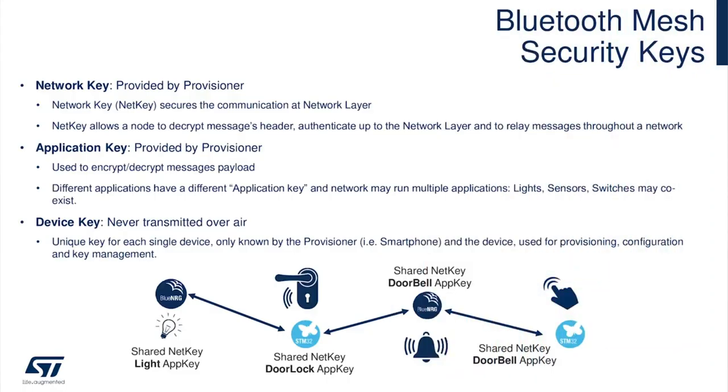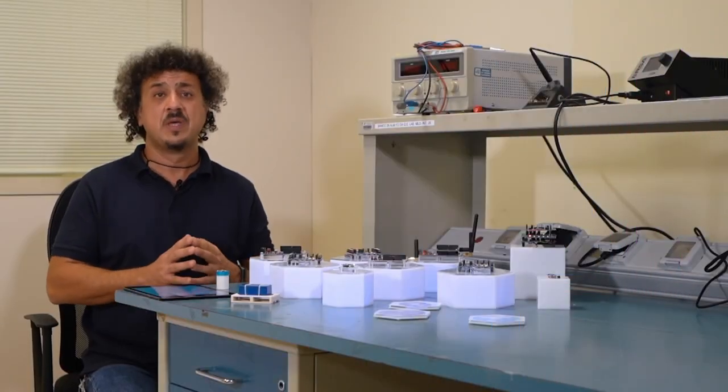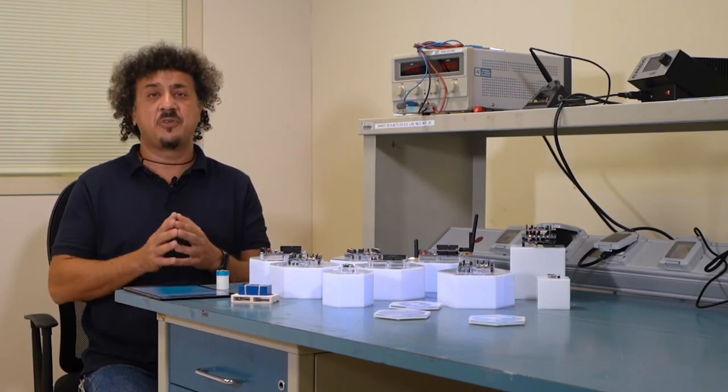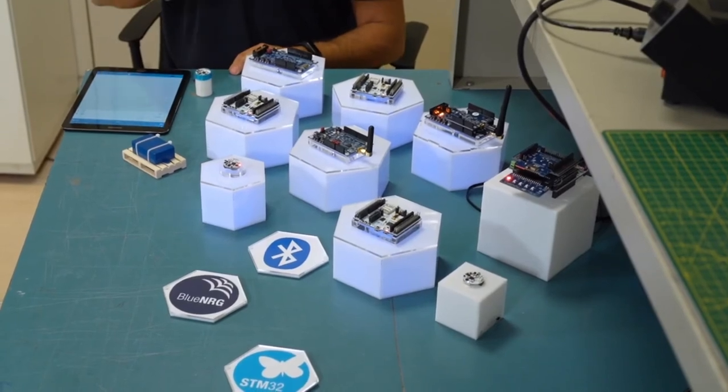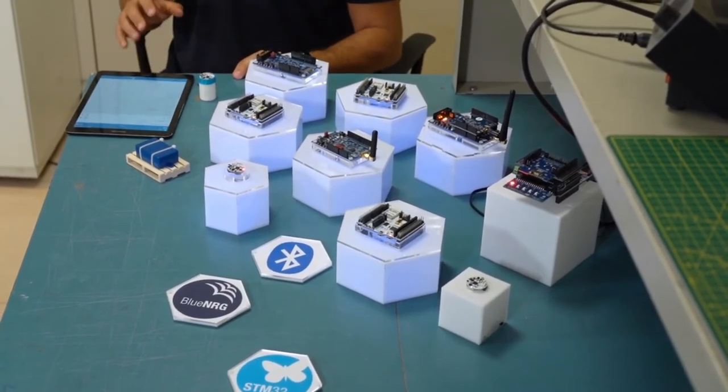Security is mandatory. For this reason, each message in the BLE Mesh network is encrypted twice, with a network key and with an application key. The network key is shared between all the nodes belonging to the same network, whereas the application key is used to differentiate different types of applications belonging to the same network.